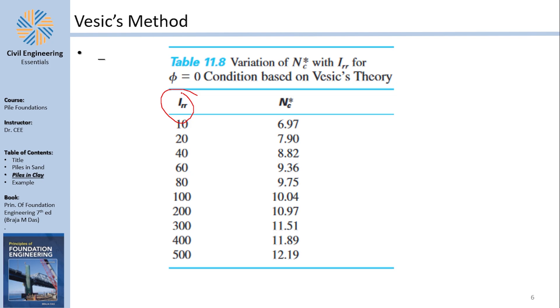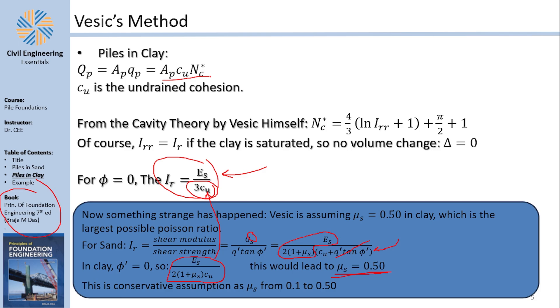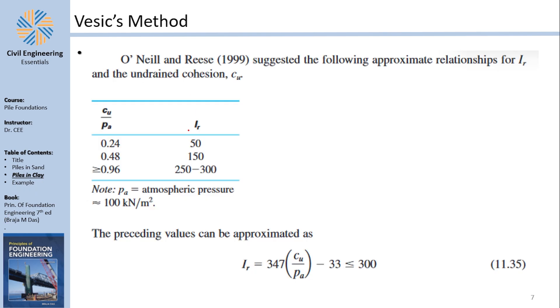Anyway, if you continue, you have Irr, which means you can find the Nc for the clay. Why? Because you want to say CuNc.